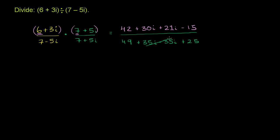Now let's simplify them. These guys down here cancel out. Our denominator simplifies to 49 plus 25 is 74. And our numerator, we can add the real parts. So we have 42 and negative 15. So let's see. 42 minus 5 would be 37. Minus another 10 would be 27. So that is 27.